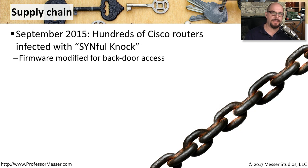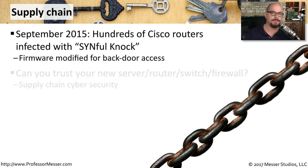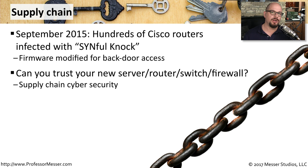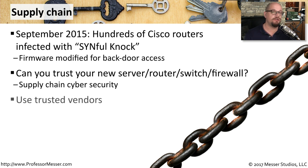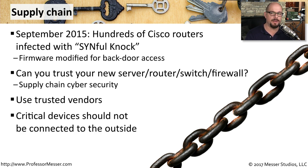In September of 2015, security researchers began finding that a number of Cisco routers connected to the internet were infected with a piece of malicious firmware called Sinful Knock. This firmware allowed the bad guys to gain backdoor access to all of these important infrastructure devices. This brought up a number of questions for people installing routers, switches, and other infrastructure devices, because they aren't really sure where the device is coming from and what checks have been put in place to make sure that the firmware in these devices is secure. End users have realized they need vendors in the supply chain that they can trust so they know exactly where this hardware is coming from.